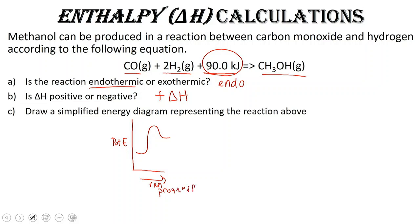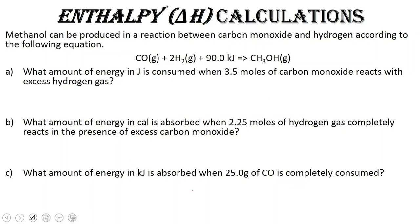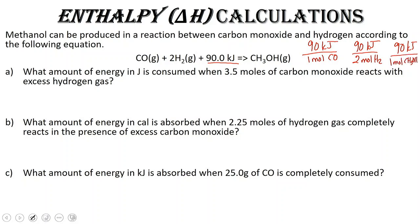Let's take a look at some calculations using the same equation. When we're given delta H, that is for the entire reaction — notice it's 90 kilojoules needed to convert one mole of CO and two moles of hydrogen to give one mole of methanol. That 90 kilojoules can be written as a conversion factor: 90 kilojoules per one mole of CO, 90 kilojoules per two moles of hydrogen, and 90 kilojoules per one mole of methanol.